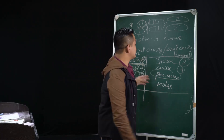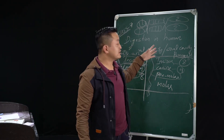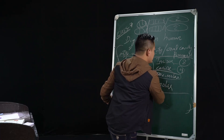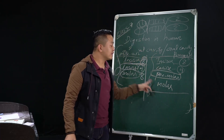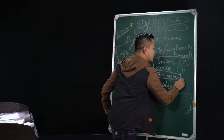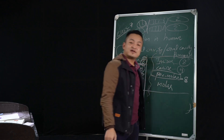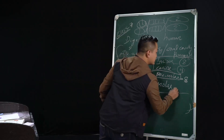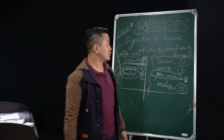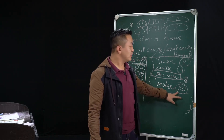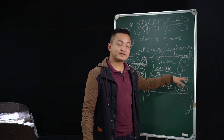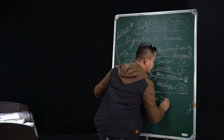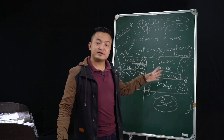For permanent teeth: incisor — 8, canine — 4, premolar — 8, and molar — 12. Let's count: 12 and 8 makes 20, then 28, 29, 30, 31, 32. All together we have 32 teeth in permanent teeth for an adult. Right after canine, for permanent teeth, we follow with premolar — 4 on the left side and 4 on the right side.